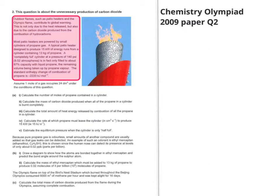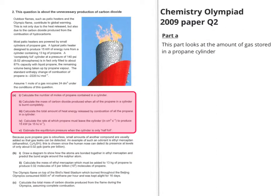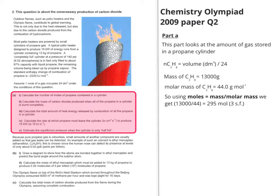If we go to the first part of the question, you can see it's really talking about V = 24N. A quick flick through part A makes it clear it's talking about the amount of gas. Let's look at the number of moles of propane contained in the cylinder. If we take V = 24N and rearrange it, the introductory section tells us a typical patio heater runs from a cylinder containing 13 kilograms of propane. They're not giving it in volume but in mass, so it's a moles = mass over molar mass calculation, which gives us 295 moles.